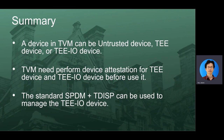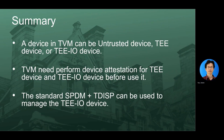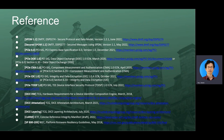To summarize: a device in a TVM can be an untrusted device, a TEE device, or a TEIO device. The TVM needs to perform device attestation for the TE device and the TEIO device before using them, because these devices need to access the TVM's confidential data. The standard bodies define SPDM protocol and TDISP protocol, and they can be used to manage the TEIO device. It is important that the Linux guest kernel and KVM add such infrastructure support. Tomorrow, John will talk about device IO in a trusted execution environment in more detail. Here are links to the related standards: SPDM, Secure SPDM, PCI-related DOE, CMA, IDE, TDISP, and DICE-related information. Thank you very much for your time.